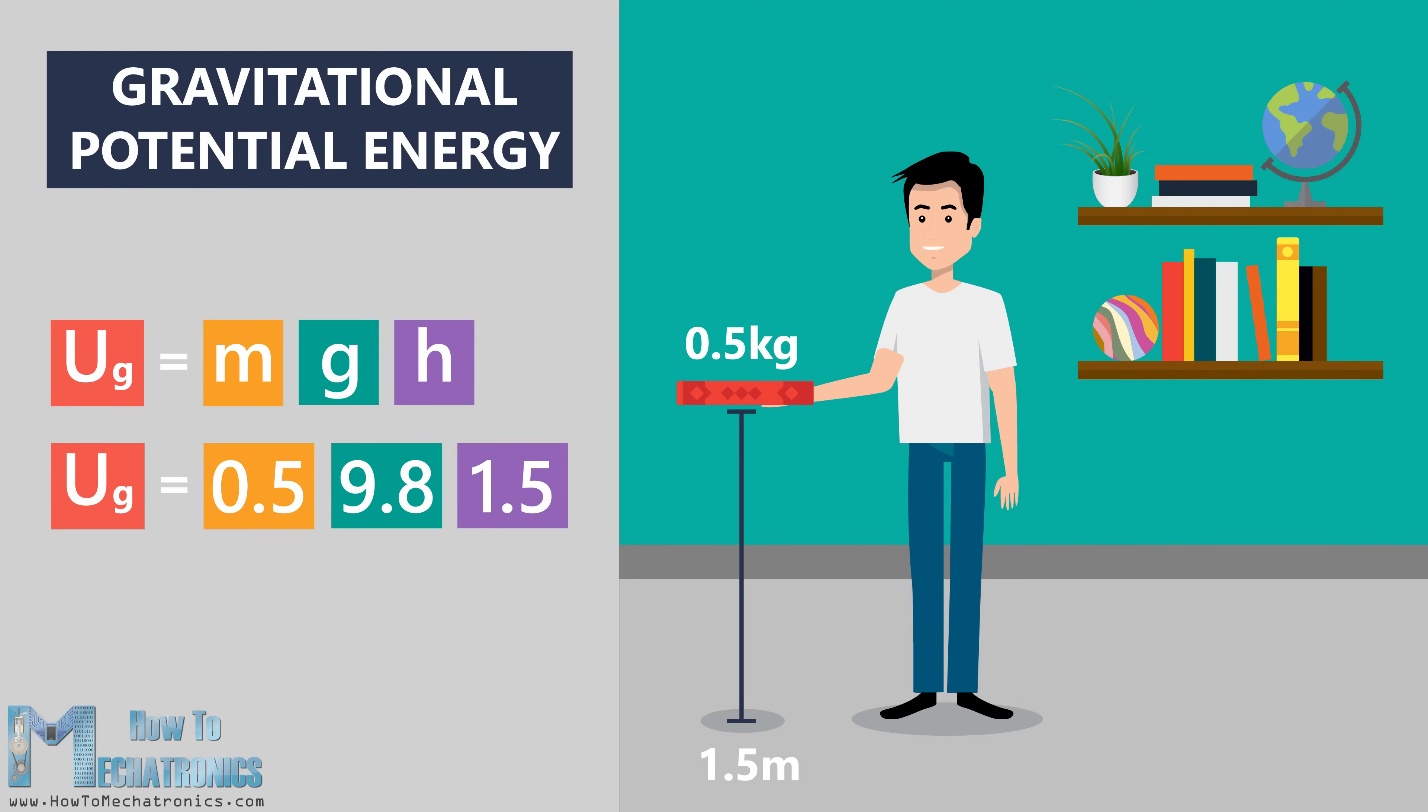For example, the mass of the book is 0.5 kilograms, and you are holding it 1.5 meters above the ground. The gravitational potential energy will be 7.35 joules.